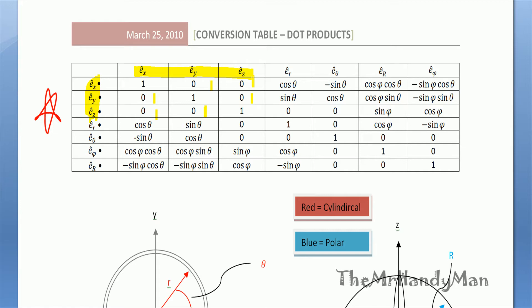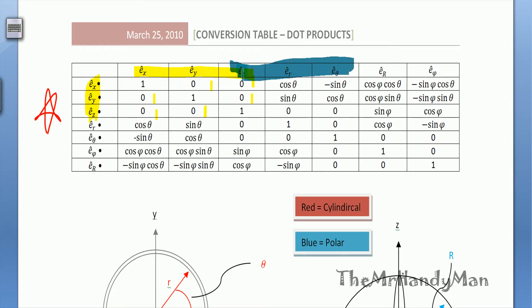So then if we switch over to the cylindrical — cylindrical is right here, this section and this section — what's nice about that is that you can see a similar thing going on in the middle. All very similar. And that's because within that coordinate system, each arm is 90 degrees from each other. But there's a certain protocol that you need to go through to use this table, and that's what I kind of want to emphasize on.